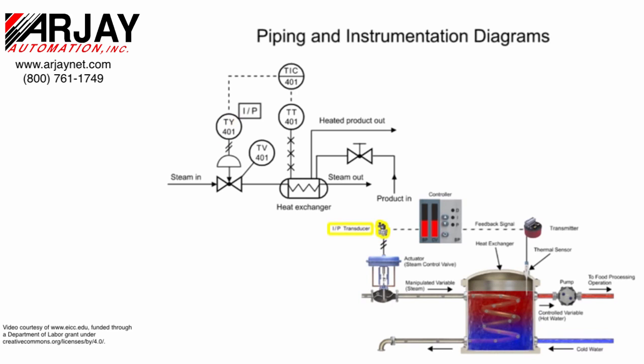The transducer converts an electronic signal to a pressure signal and is indicated by the square containing the letters I and P. The line with diagonal marks designates a pneumatic connection.